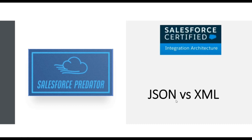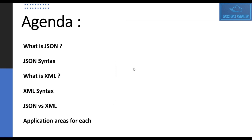In today's video we learn about JSON and XML. While working with integration we often need to send data from one system to another, and JSON and XML are two widely used formats for exchanging data between different systems. We'll cover what JSON is, its syntax, XML and its syntax, a comparison between the two, and areas where each is preferable.